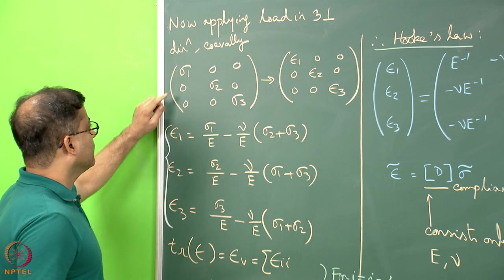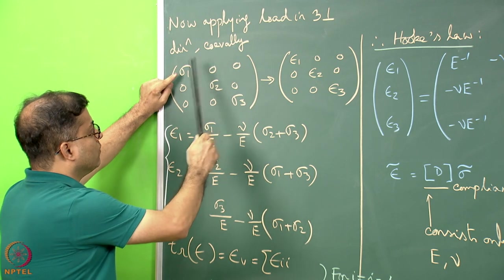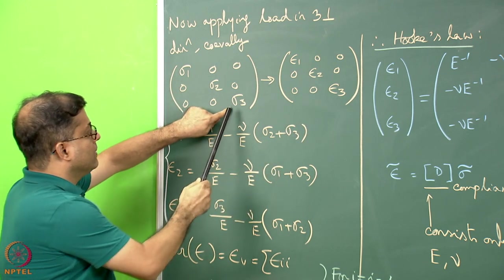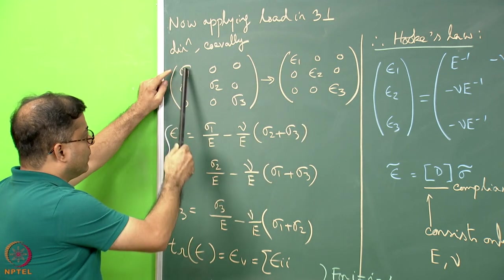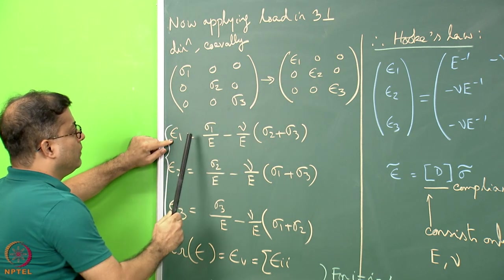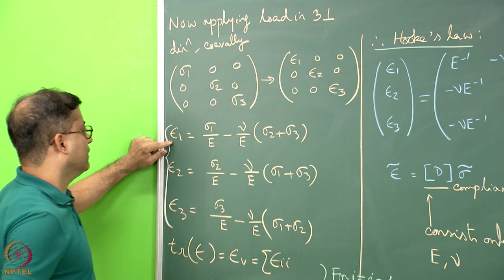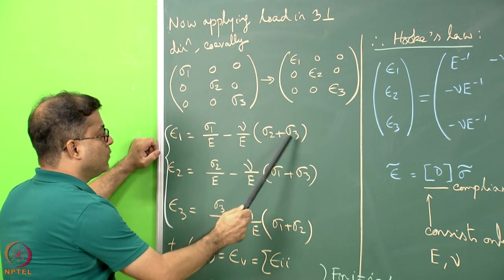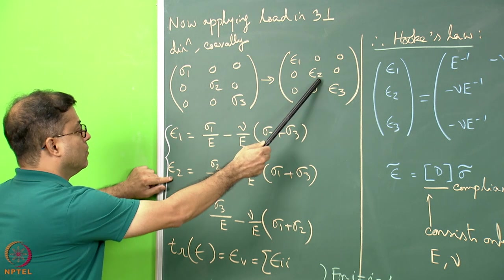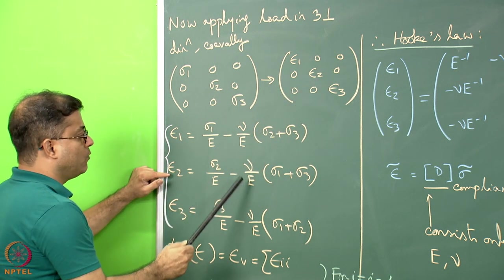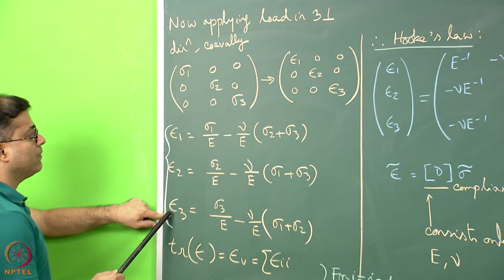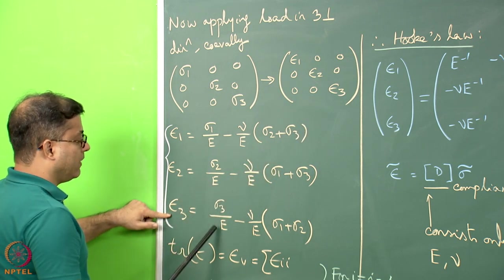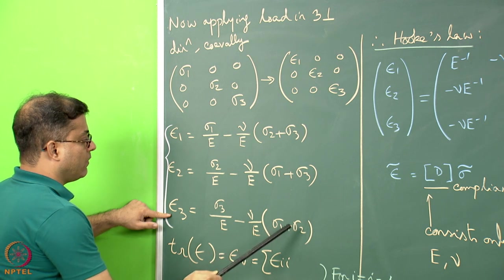We have seen in terms of three different matrices how the strains correspond to each applied stress. If sigma 1, sigma 2, and sigma 3 are all applied together, epsilon 1 will be the sum of all three individual cases: sigma 1 by E minus nu by E multiplied by (sigma 2 plus sigma 3). Epsilon 2 is sigma 2 by E minus nu by E times (sigma 1 plus sigma 3), and epsilon 3 is sigma 3 by E minus nu by E times (sigma 1 plus sigma 2).